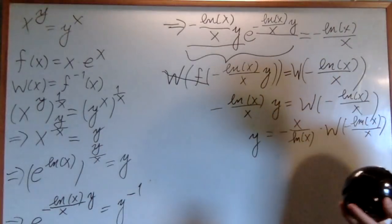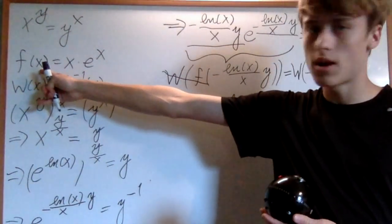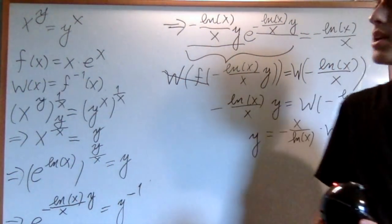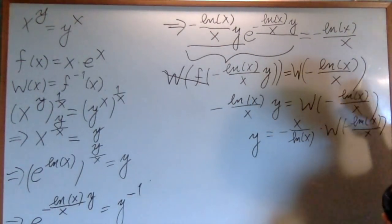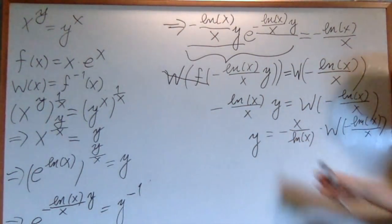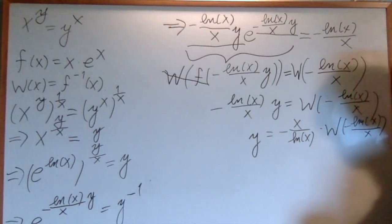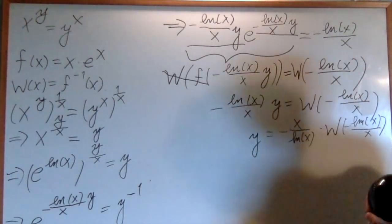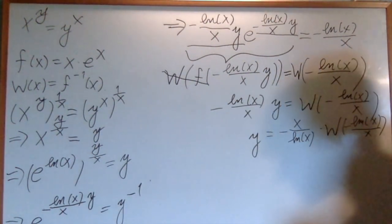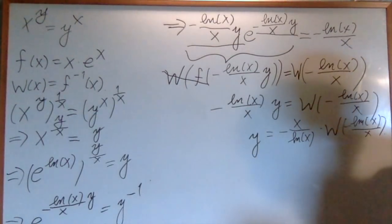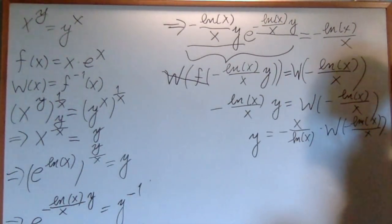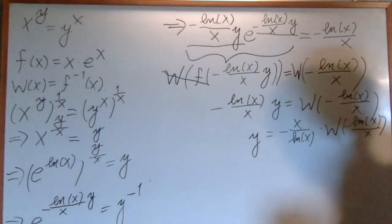So, what we did was, we utilized the inverse function of this very specific function. We got it into that form. We used it. And we got our answer. So, the Lambert W function, in solving exponential equations, is actually very useful. Especially in ones where they have two variables, both using in the exponents.